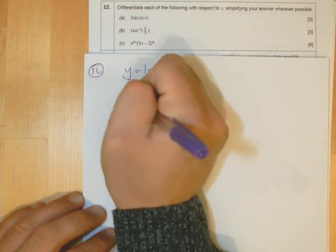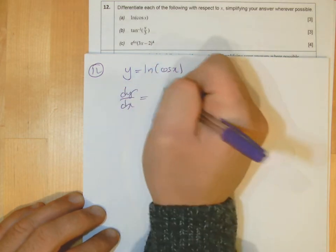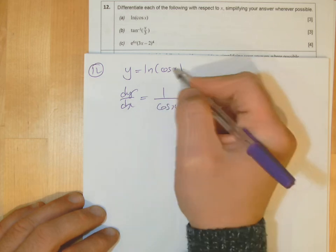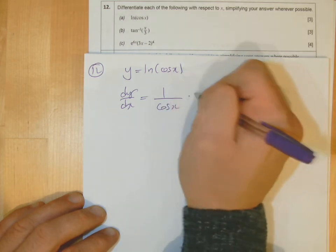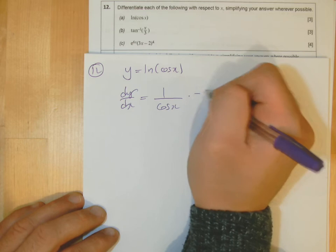Function over function, so dy/dx. Remember now ln becomes 1 over, so 1 over cos x, but times it then by the derivative in here, which is minus. Derivative of cos x is minus sin x.